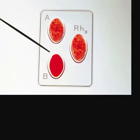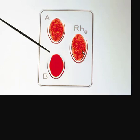Here's another example: the A antibody causes clumping and the rhesus monkey factor causes clumping, but B did not clump. So this person is A positive — whatever clumps indicates the blood type.